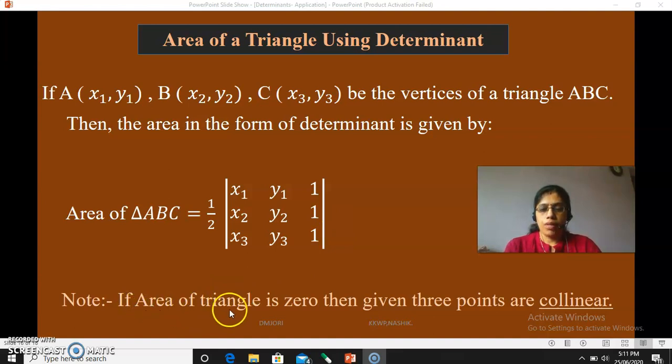Now here, remember one thing, if the area of triangle is zero, then the given three points are collinear. After finding area of triangle using this formula, using determinant method, if you will get your answer zero, then you can conclude that the given three points are collinear. It is very simple because there is no area occupied by those three points, means the three points are in one line, collinear. Note, remember that thing.